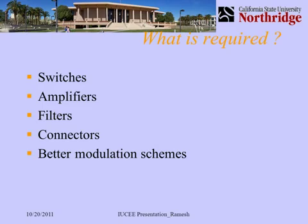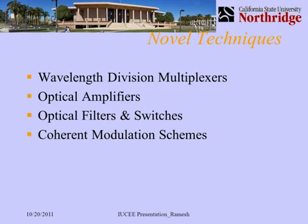To build a communication system, we need switches, amplifiers, filters, connectors, and better modulation schemes. Fiber optics has spawned wavelength division multiplexing, where multiple wavelengths are transmitted through a single optical fiber and demultiplexed at the other end. Optical amplifiers operate entirely in the optical domain without conversion to electrical, avoiding associated losses. Optical filters and switches, as well as coherent modulation schemes — long available in conventional communications but with tremendous advantages when applied to optics — are all key components.